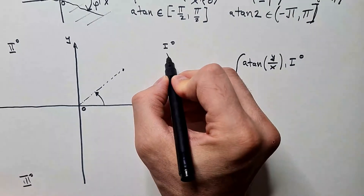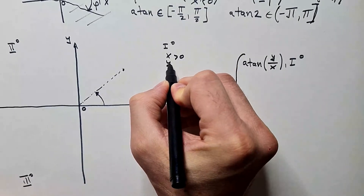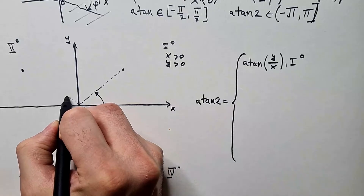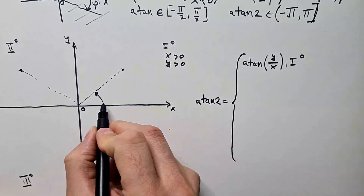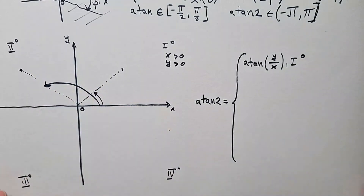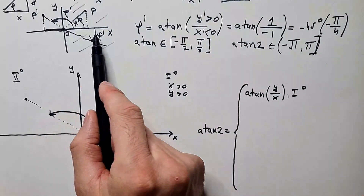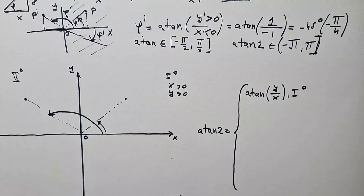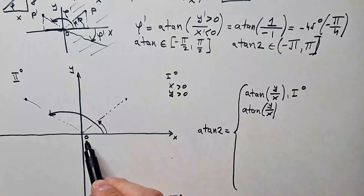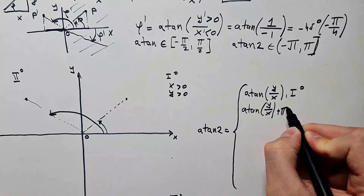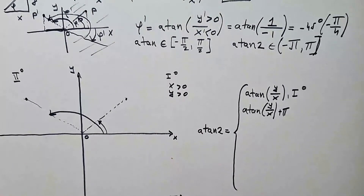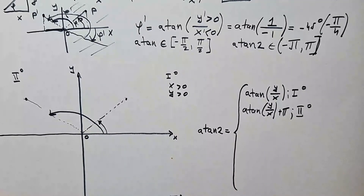Now let's go to the second quadrant. We have a point here and this is the beam to that point. The shortest angle with respect to the positive x-axis is this one. But we saw that regular arctangent will actually give us the reflected angle. To account for that, we say that arctangent 2 is arctangent of y over x — which gives an angle in the fourth quadrant — and then we add pi, or 180 degrees, to arrive at the correct second quadrant angle. This is arctangent 2 in the second quadrant.